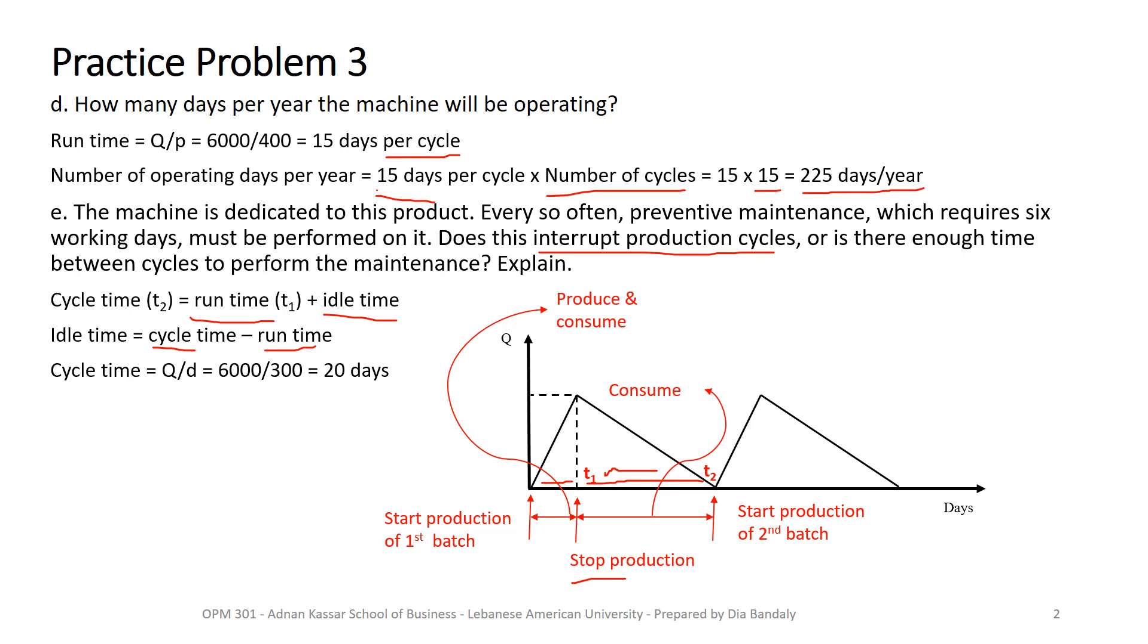Now, what about the runtime? The runtime, we found it before to be equal to 15 days. So now I can find my idle time. My idle time is 20 minus 15. That's five days. In fact, this diagram is not proportional. T1 is greater than the idle time. So it doesn't matter. What matters is the logic. So we find the idle time to be five days. And five days is less than six days required for the preventive maintenance. So we conclude that there would be an interruption for our cycles.